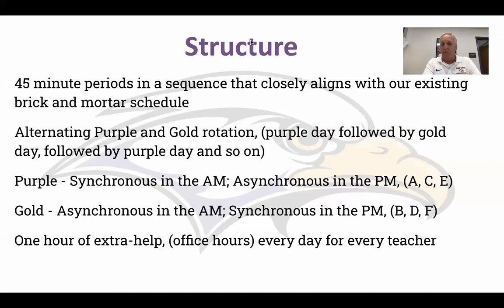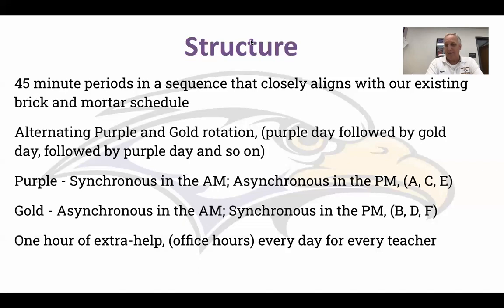Purple days always occur on A, C, and E days. Gold days always occur on B, D, and F days. So the first day of school will be a purple day — an A day. The next day will be a gold day — a B day, followed by a purple C day, then a gold D day, and so on through the six-day cycle, then it starts all over again.